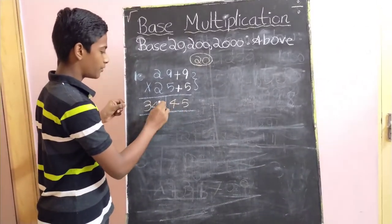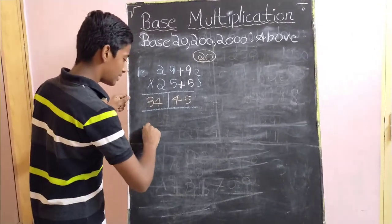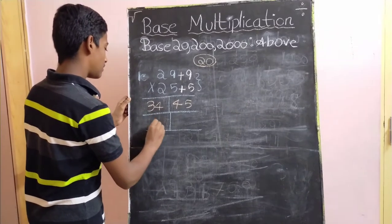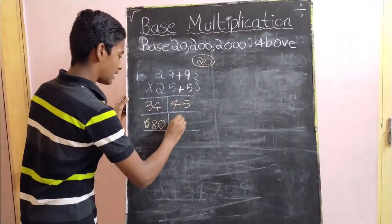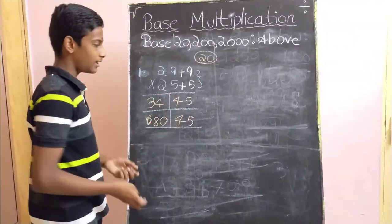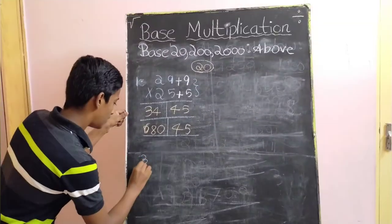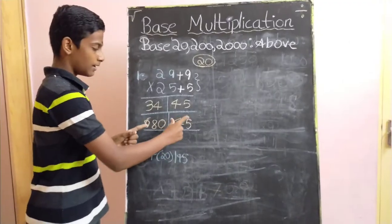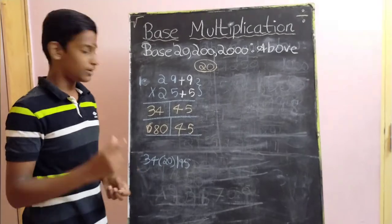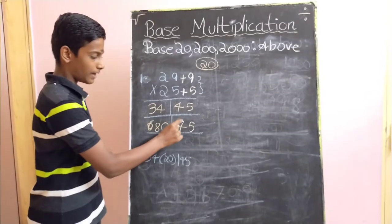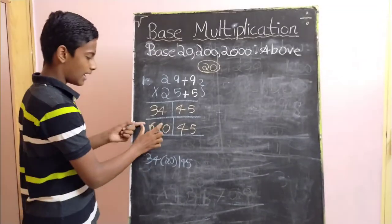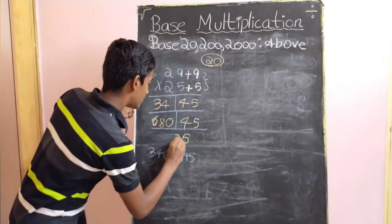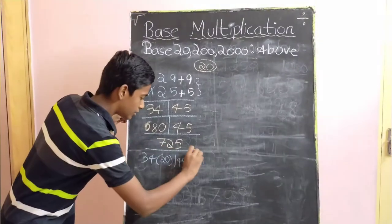So, we have to multiply this 34 with the nearest secondary base number, that is 34 into 20, which gives us 680, and here it is 45. This step can be shortened and written as 34, 20, 45. Unlike what we saw in other videos, here we are not going to write 680 and 45 as our answer separately — instead we are just going to add 45 with 680. So, 680 plus 45 gives us 725, and our product is 725.